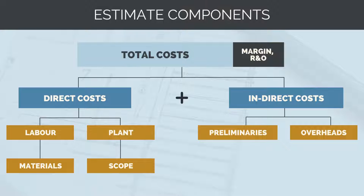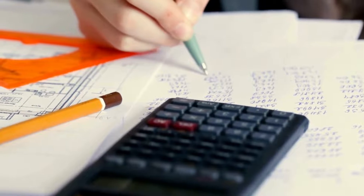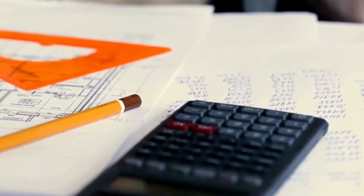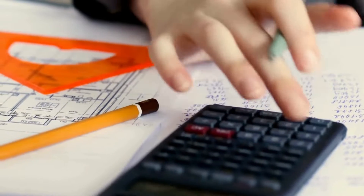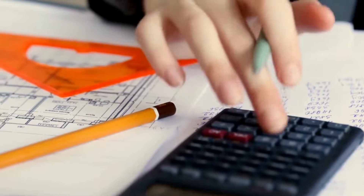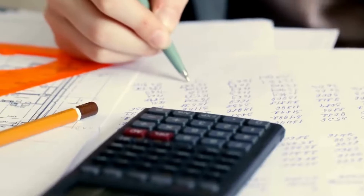To our total project costs, we need to factor in some contingency, referred to as our risk and opportunity, which accounts for any uncertainties in our pricing. And finally, we can then add our profit margin. Now we understand the components of a cost estimate, it will be easier to understand the steps we need to follow to produce an estimate.